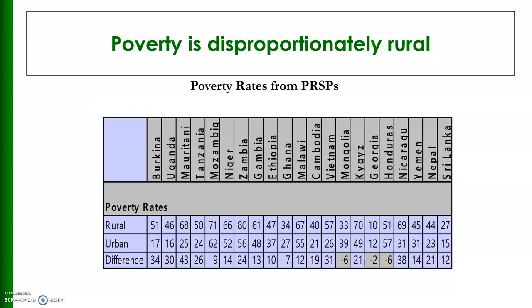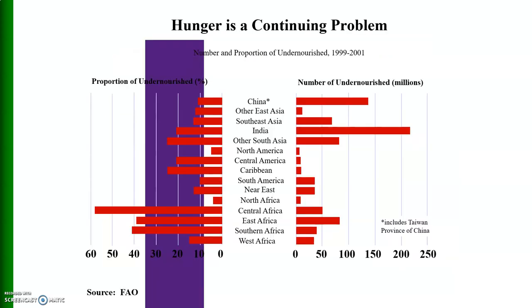Here is an account of some developing countries where poverty is disproportionately rural. You can see poverty rates in rural areas, urban areas, and the difference between urban and rural poverty rates in different countries. Here is the hunger problem shown from two sides: on the left-hand side the proportion of undernourished people as a percentage in various regions, and on the right-hand side the number of undernourished people in millions.